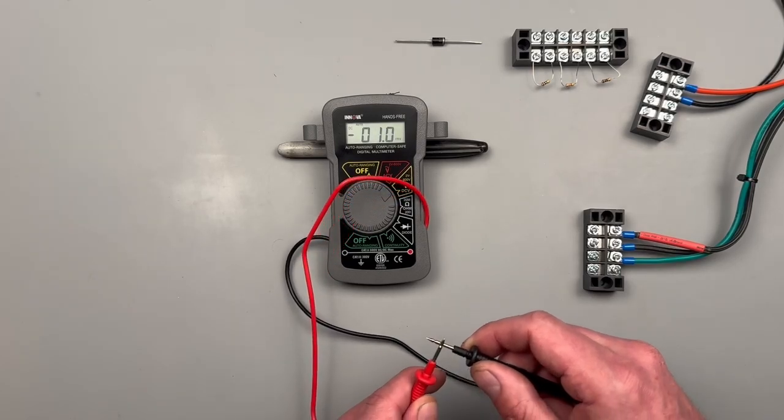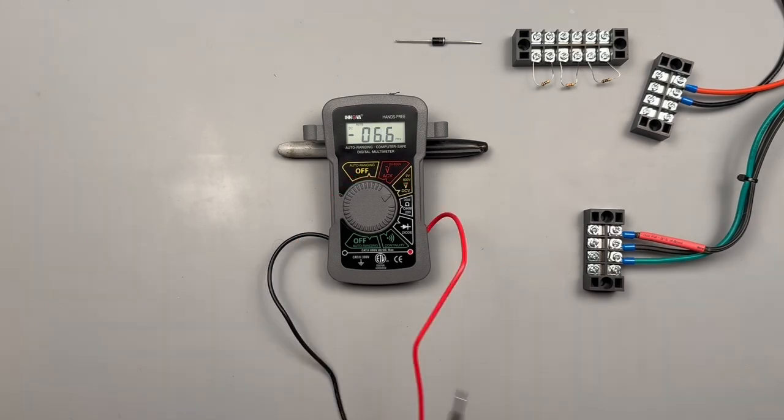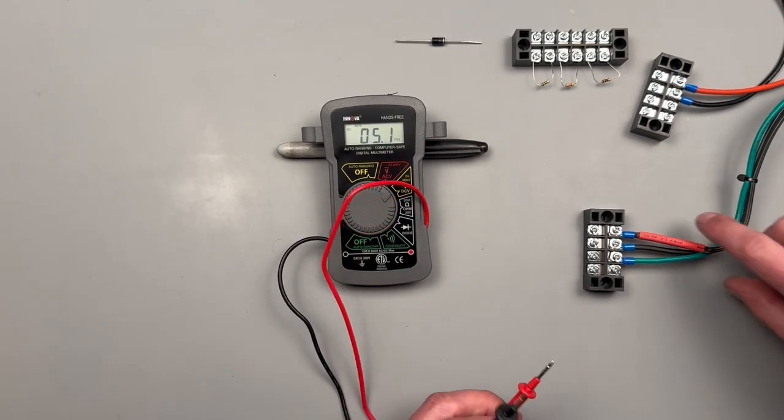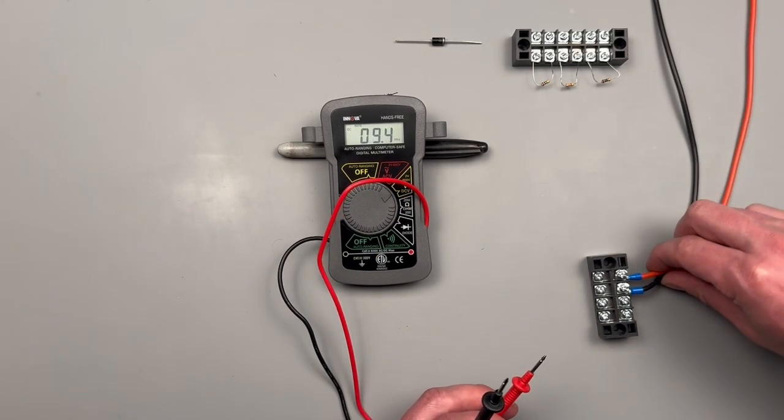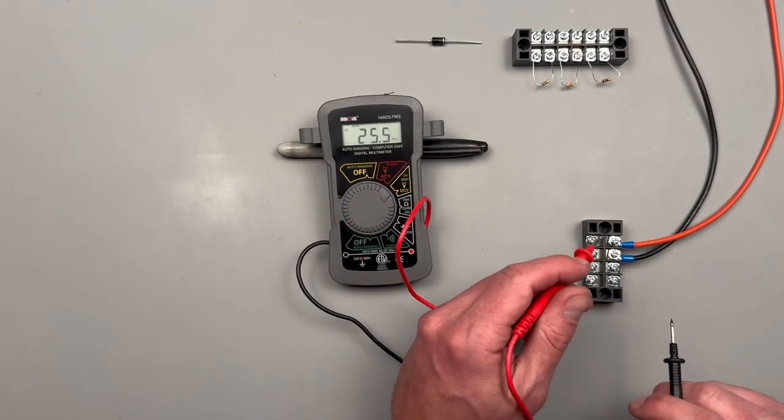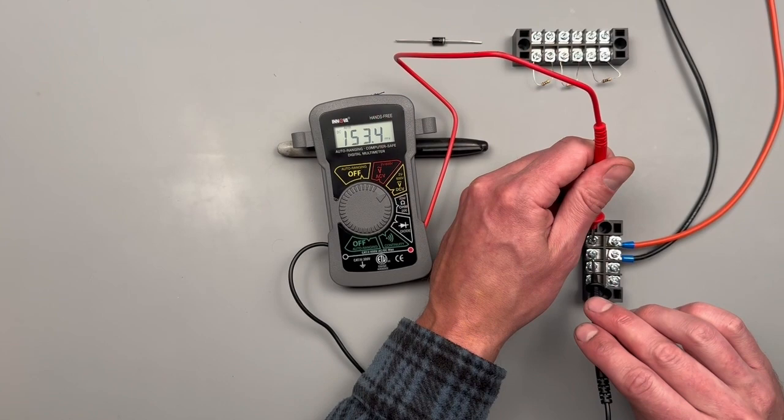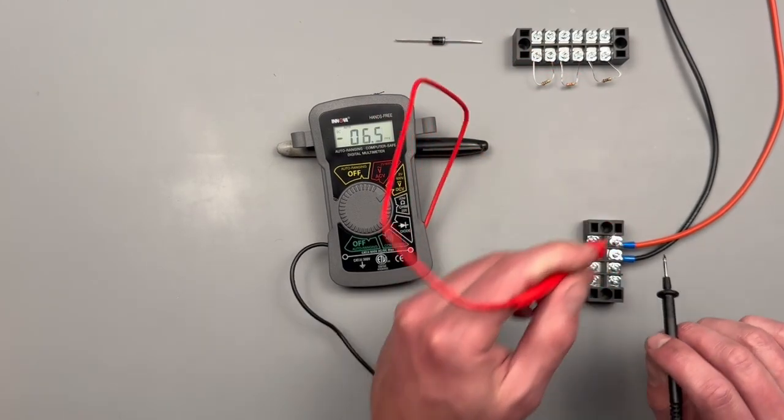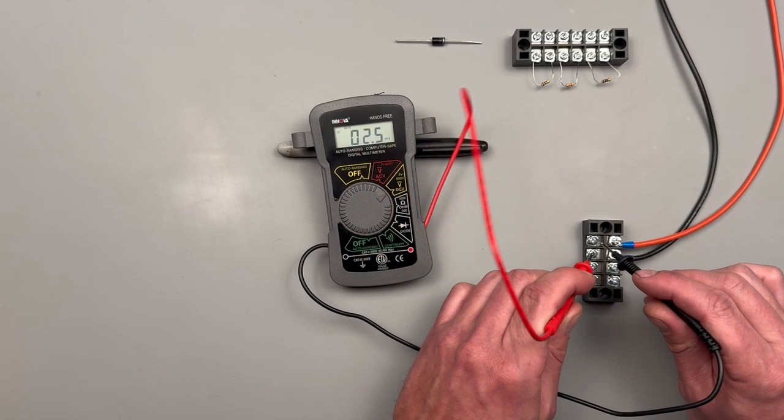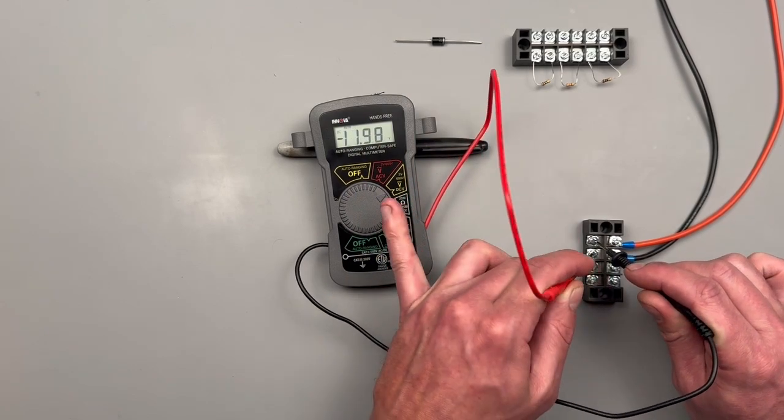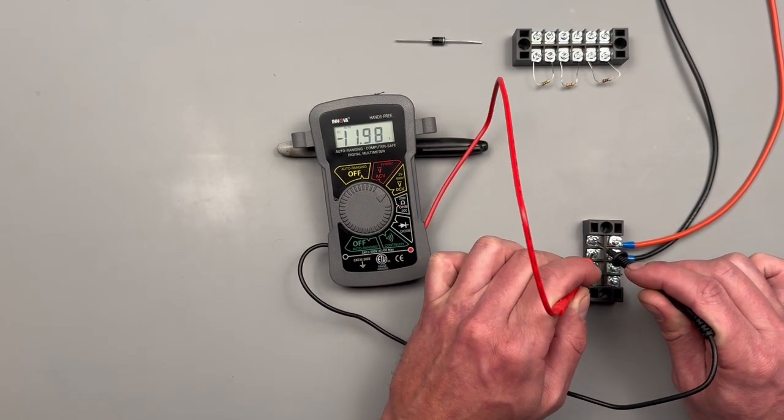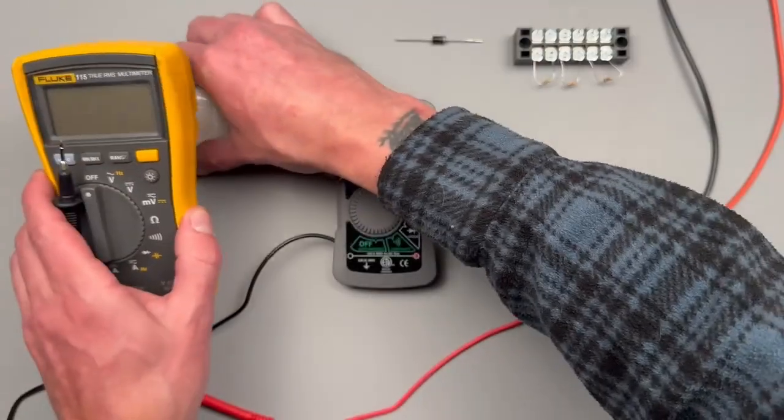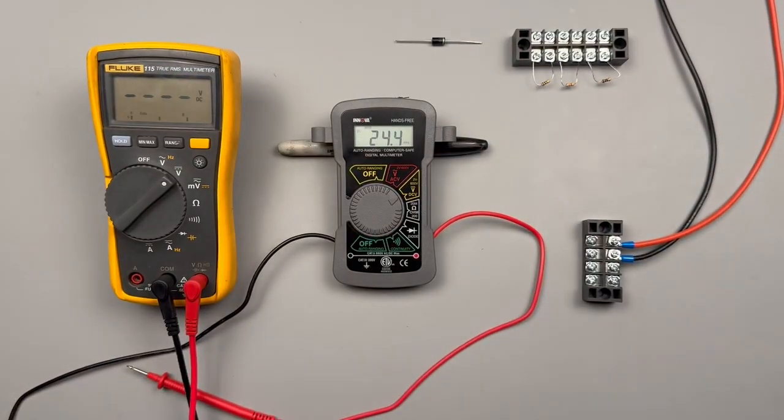For a DC voltage measurement, our polarity is going to matter. That means I'm going to want my red to power and my black to common. 11.98. Let's see what happens when we reverse the polarity - see how it has a negative sign, that means the polarity is backwards. That should be somewhat accurate. Let's see how the Fluke compares. Within about a tenth of a millivolt.